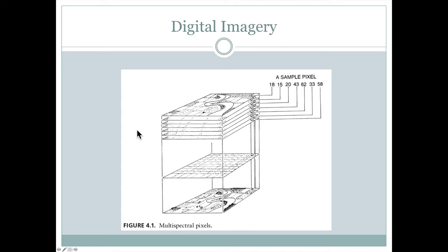First of all, one of the biggest differences between digital imagery and film photography is that we have these different layers or bands. Each one of these would be called a band. So we'd have one, two, three, four, five, six, seven different bands here.